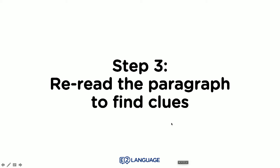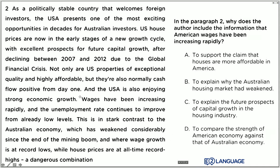Step three: reread the paragraph to find the clues. We need to read the surrounding sentences to find the context — the reason why. So: "wages have been increasing rapidly and the unemployment rate continues to improve from already low levels. This is in stark contrast to the Australian economy, which has weakened considerably since the end of the mining boom." Why did the author say this? To support houses being more affordable in America? To explain why the Australian housing market weakened? To explain future prospects of capital growth? Or to compare the American economy against the Australian economy?